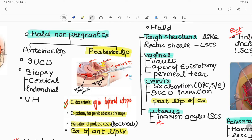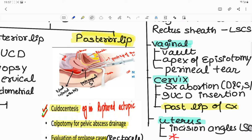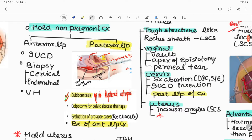Posterior lip of cervix is held in certain conditions. As you can see in this picture, the Valsellum is holding the posterior lip of cervix. Number one indication is culdocentesis, where blood is aspirated through posterior vaginal fornix collected in the pouch of Douglas, for example in ruptured ectopic. Number two is colpotomy for pelvic abscess drainage. Number three is evaluation of prolapse casings like rectocele, and number four if we have to take biopsy of anterior lip of cervix.